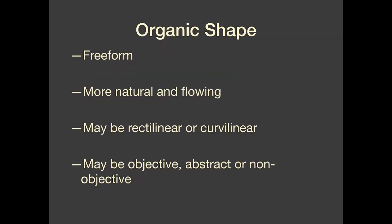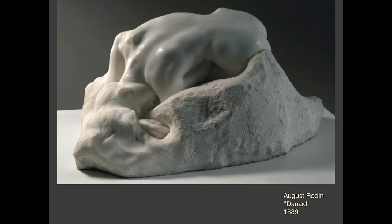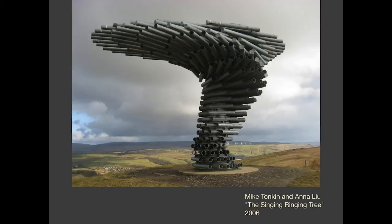Next up we have organic shape. It's considered to be the opposite of geometric shape. It is much more freeform, more natural and flowing. Organic shape also may be rectilinear or curvilinear, and it may be objective, abstract, or non-objective. The key here is that it's more of a freeform shape — it isn't based in mathematics. Human beings are organic shapes; we're kind of natural and free-flowing, at least in terms of our form. Here is an abstract organic shape — it's a sound sculpture out in the countryside in Great Britain.